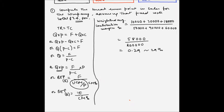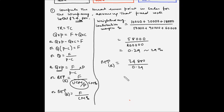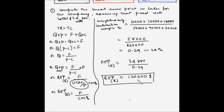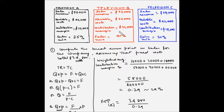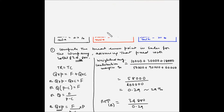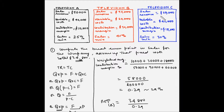Now we can use this in the break-even formula. Break-even point in terms of revenue equals fixed cost divided by the contribution margin percentage: $34,800 ÷ 0.29 = $120,000. This means the total combined sales for A, B, and C should be $120,000. We are already doing $200,000 in sales, which is much more than $120,000, so we have already surpassed the break-even point and are currently making profits.